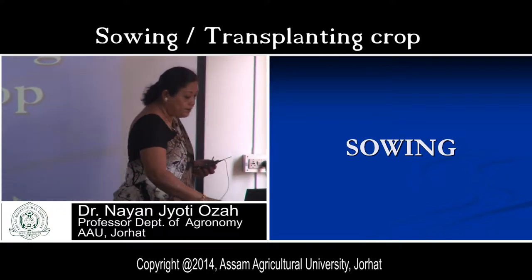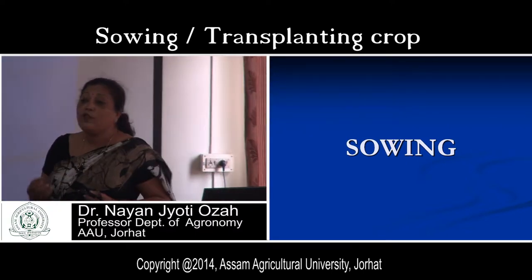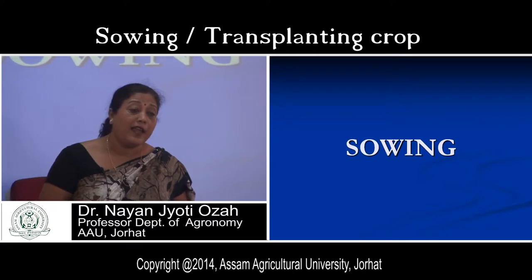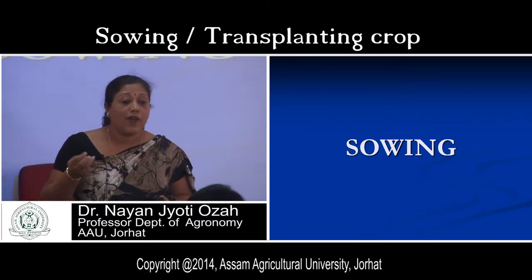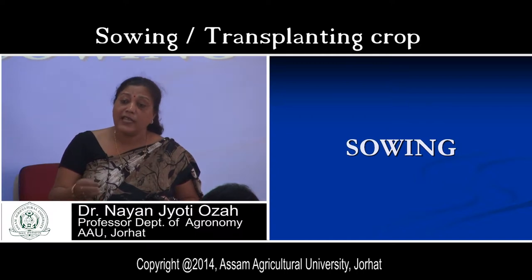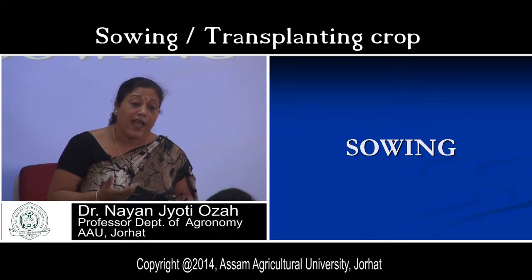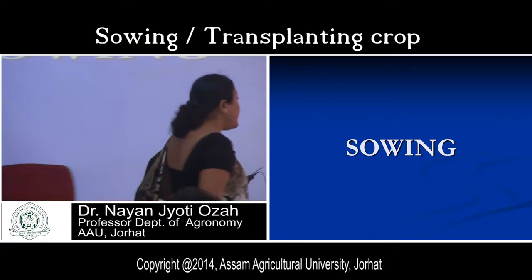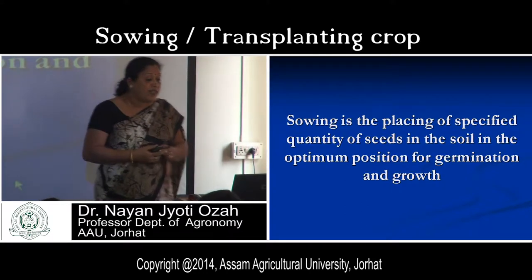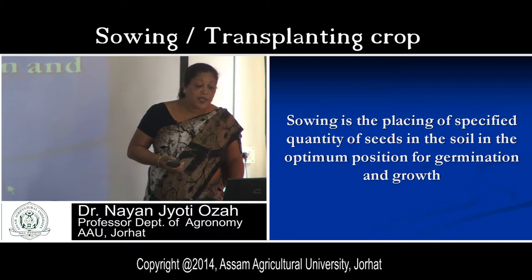Sowing means a certain amount of seeds must be placed in soil at an optimum position for germination and growth. You have to take a certain quantity of seed for a particular area and sow it in the field at an optimum position so that we can expect good germination and growth of the crop. The definition of sowing is: placing a specified quantity of seed in the optimum position of soil for germination and growth.